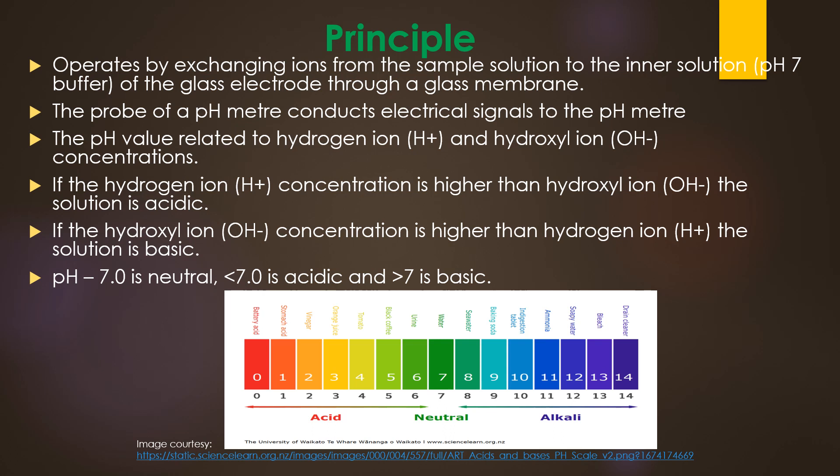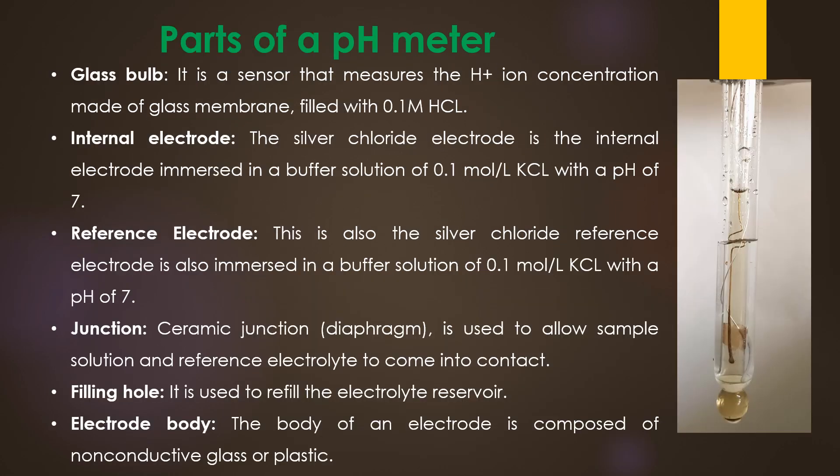The pH at 7 is known as neutral, less than 7 is acidic, and more than 7 is basic. The potentiometric pH meter measures the voltage between two electrodes and displays the results converted into the corresponding pH value. A basic pH meter consists of a voltmeter attached to a pH-responsive electrode placed inside a glass bulb, and a reference electrode.